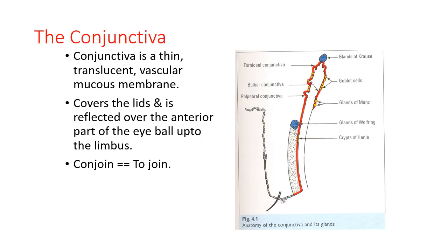Conjunctiva is a thin translucent vascular mucous membrane which lines the interior surface of the eyelids and the anterior aspect of the eyeball. The word 'conjoint' means to join — so it joins the anterior part of the eyeball up to the limbus with this translucent mucous membrane.